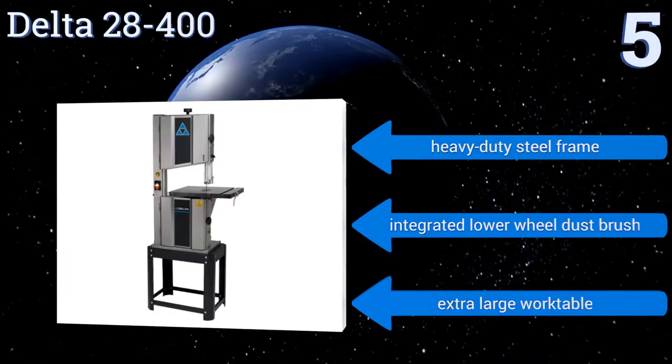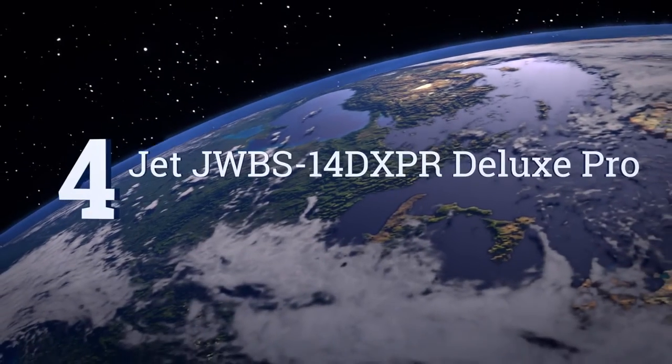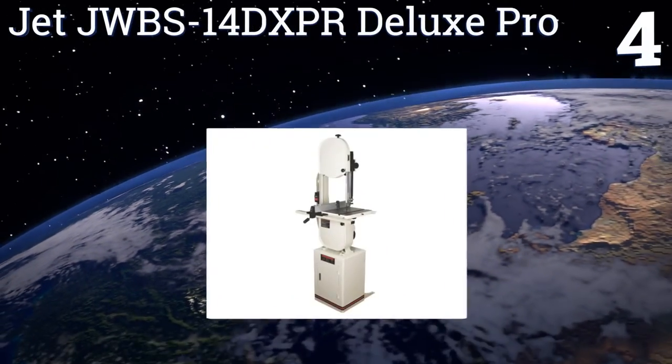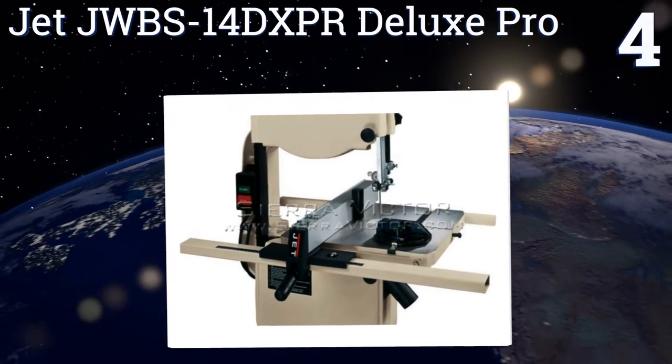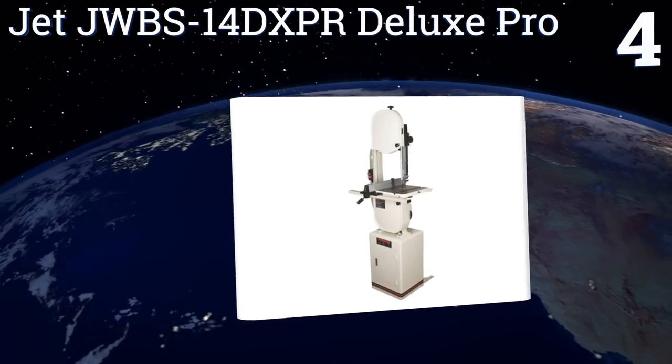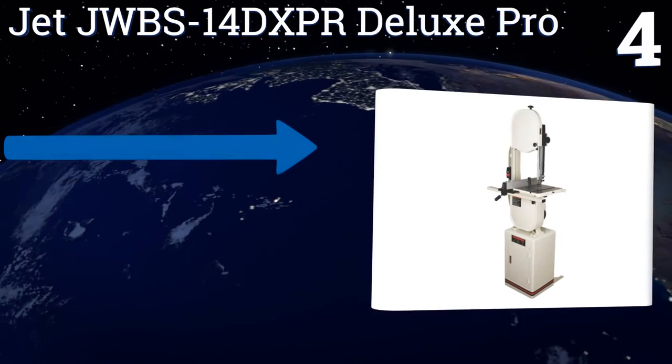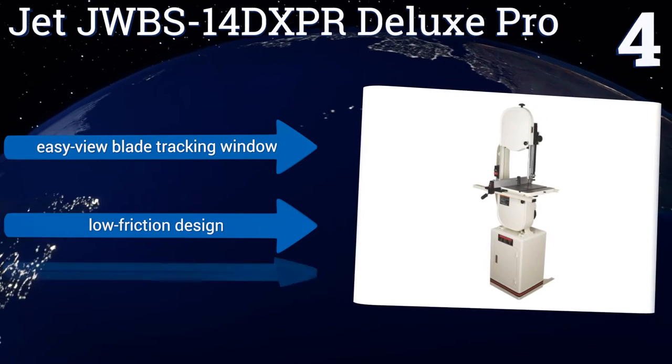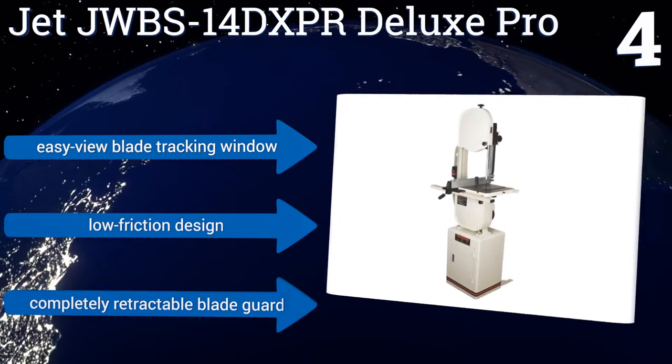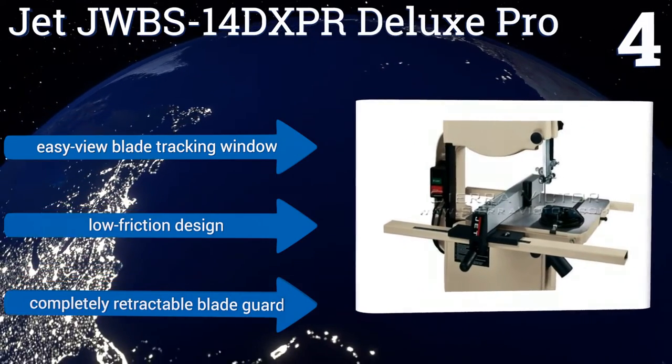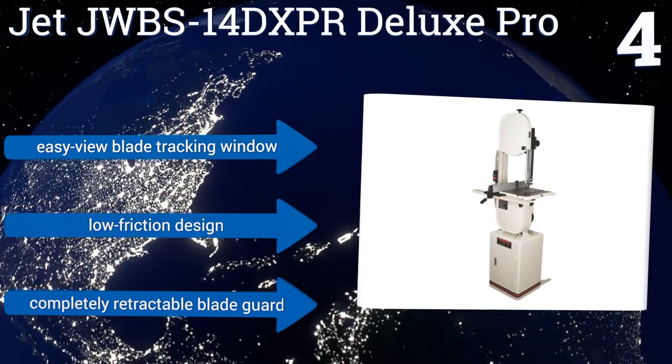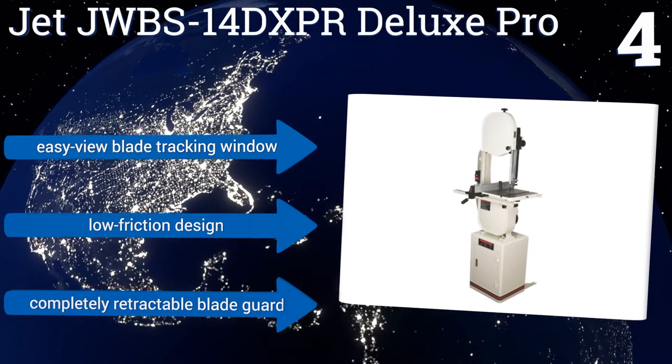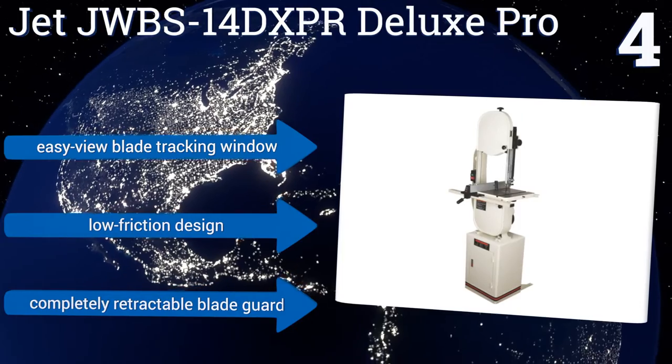At number 4, the JET JWBS-14DXPR Deluxe Pro is a great choice for serious woodworkers. It comes equipped with a massive cast-iron frame that allows for impressive power and remarkable stability during use. Plus, its two-speed poly V-belt drive system can be set to 1500 or 3000 sfpm. It boasts an easy-view blade tracking window, a low-friction design, and a completely retractable blade guard.